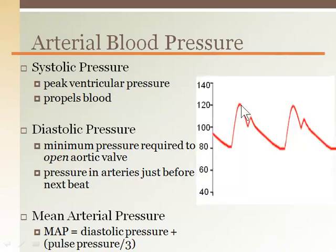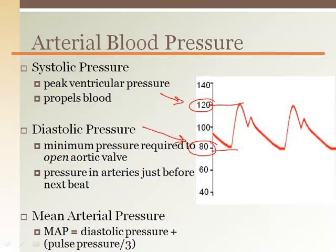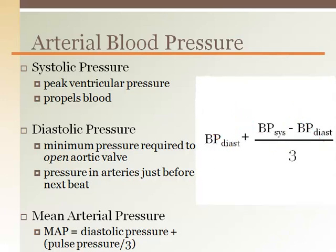The systolic blood pressure, which is the larger number, is the peak pressure developed by the heart to propel the blood forward. The diastolic blood pressure, or smaller number, is the pressure in the aorta at the time the left ventricle begins ejecting blood out. Because blood is pulsatile and not steady, it is difficult to know what blood pressure value to use in some hemodynamic equations. The mean arterial pressure is a calculation of average blood pressure over a complete beat.